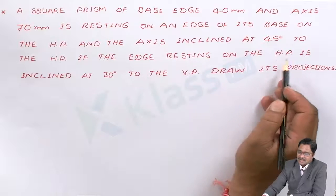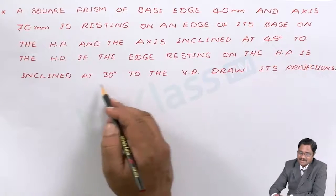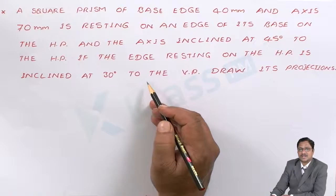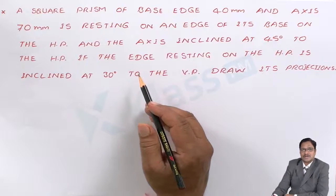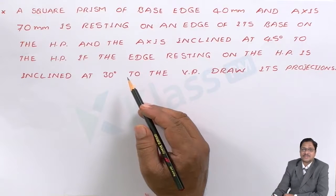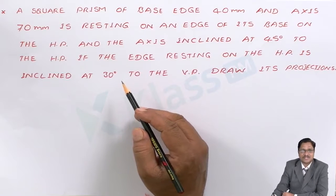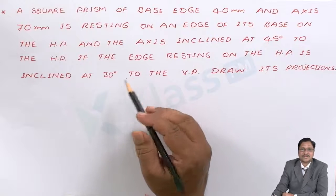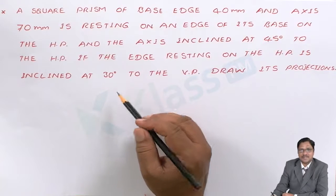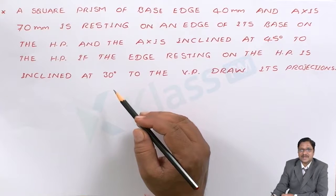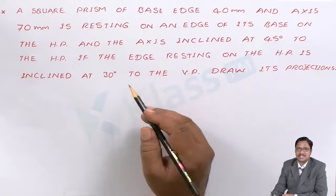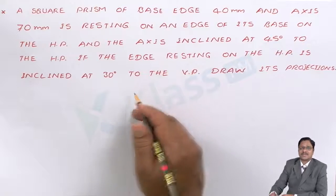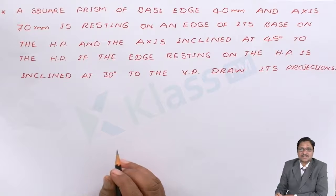The edge resting on the HP is inclined at 30 degrees to the VP. By reading the problem itself you have to come up with an idea of how the object is to be positioned to meet those conditions. Every time, observe the resting condition — it guides us to the proper initiative, i.e., which figure to draw first. Since it is resting in HP, we proceed with HP projection, that is the top view.